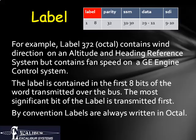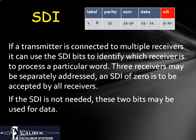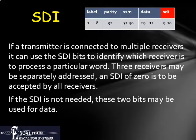If a transmitter is connected to multiple receivers, it can use the SDI bits to identify which receiver is to process a particular word. For example, if a transmitter is attached to three wheel assemblies, a particular data word may be directed at a single assembly, and it will be ignored by the other two. Alternatively, an SDI of zero will be accepted by all three assemblies. If the SDI is not needed, these two bits may be used for data.